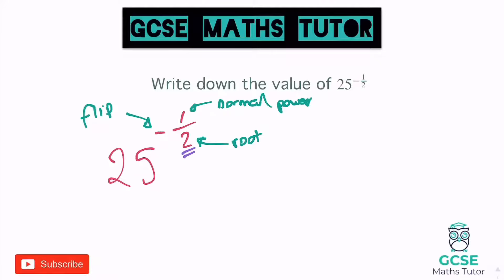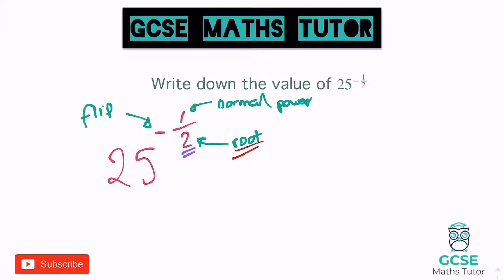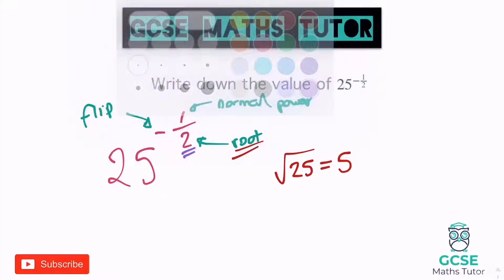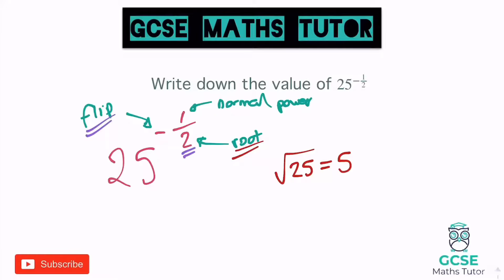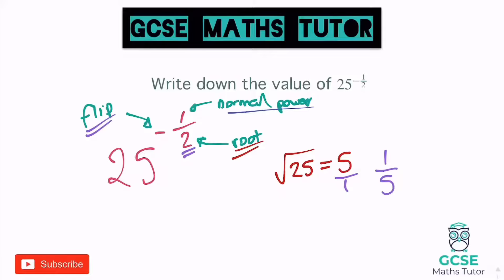So for 25 to the power of negative a half, I'm going to deal with the root first. The square root of 25 is 5. Now I'm going to move on to the flip — the reciprocal. So if I flip 5 over, remembering 5 is 5 over 1, if we flip that over it becomes 1 over 5. The normal power there is just a 1, and anything to the power of 1 is just itself. So 1 over 5 is my final answer.